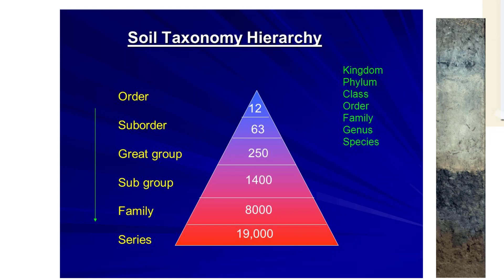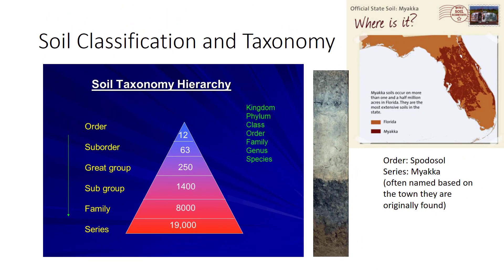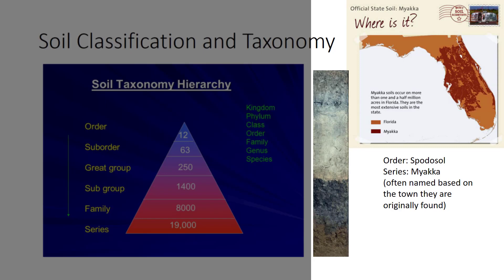The soil series is the taxonomic group with the narrowest range of features, and all pedons within a series have very similar soil profiles. Each series is given the name of the town, county, or other location near where the series was first identified. Myaca, a typical flatwood soil, is the Florida State soil. Myaca soils contain mostly sand and is a deep, somewhat poorly drained acid soil. Myaca is in the order Spodosol, which you will learn about in the next few slides.